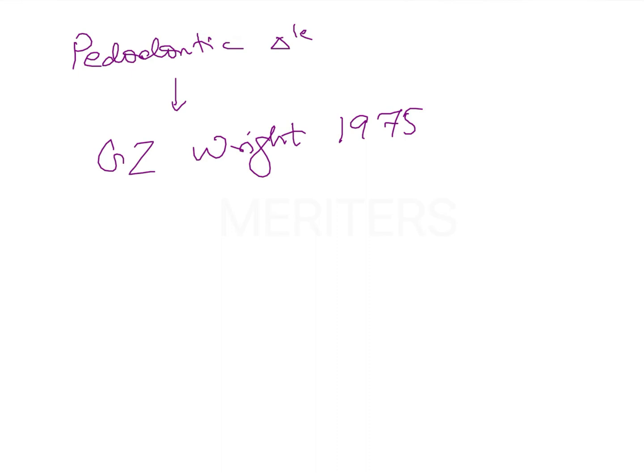He gave this in order to explain the relationship seen in pedodontics. The patient-doctor relationship for an adult patient is a very linear relationship. There's an adult patient who comes to the dentist, and the dentist only has to communicate the treatment plan and diagnosis directly to the patient.